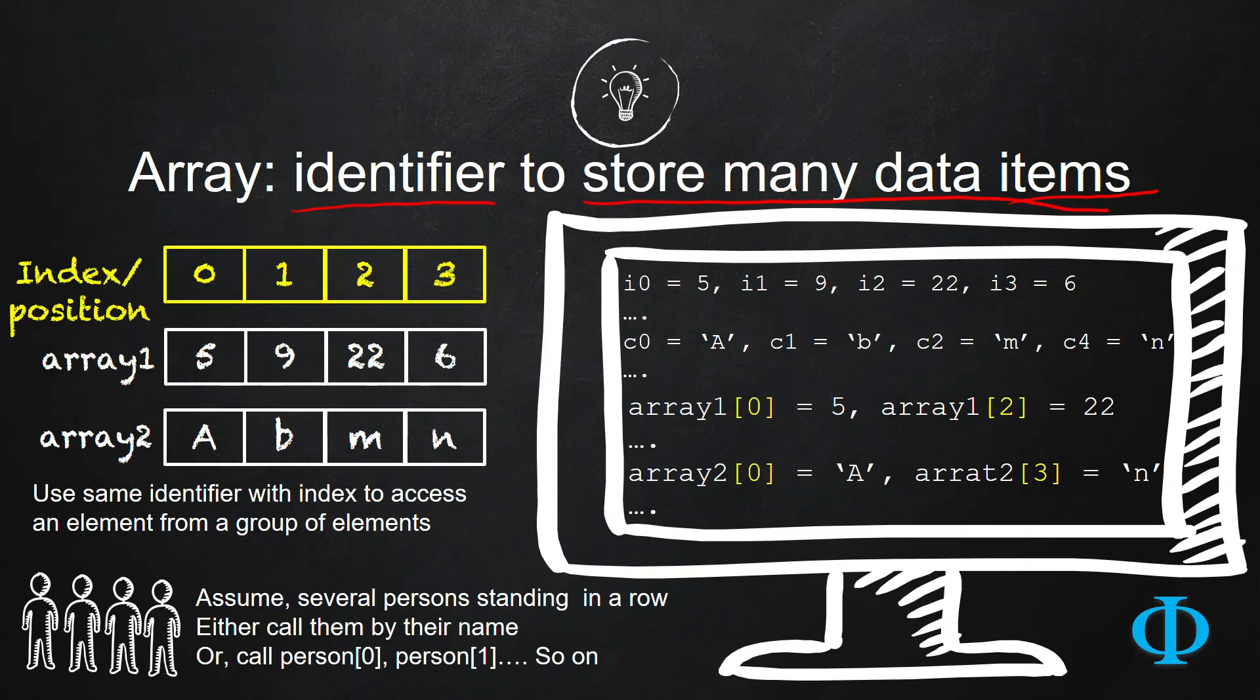What does that mean? You can assume this following scenario. Let us assume there are several persons standing in a row. You have two different options to identify them. The first one is you identify them by name. Let's say this is Alice, this is Bob, this is Charles, this is Dennis. But if the row is really long, is it a very convenient way? No, because you need to remember lots of names.